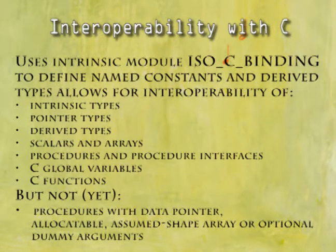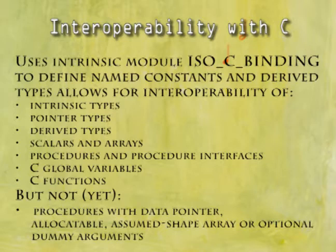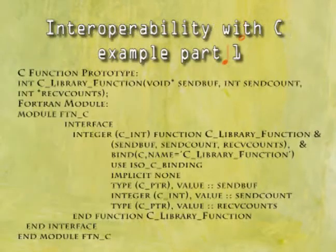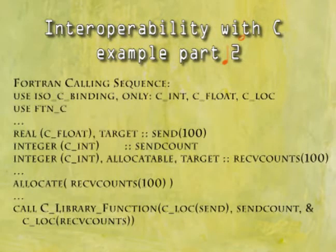Interoperability with C uses the intrinsic module with ISO C binding to define named constants and derived types. This allows interoperability of intrinsic types, pointer types, derived types, scalars and arrays, procedures and procedure interfaces, C global variables, and C functions — but not procedures with data pointers, allocatable, assumed-shape array, or optional dummy arguments. Examples of interoperability with C are given in two parts.